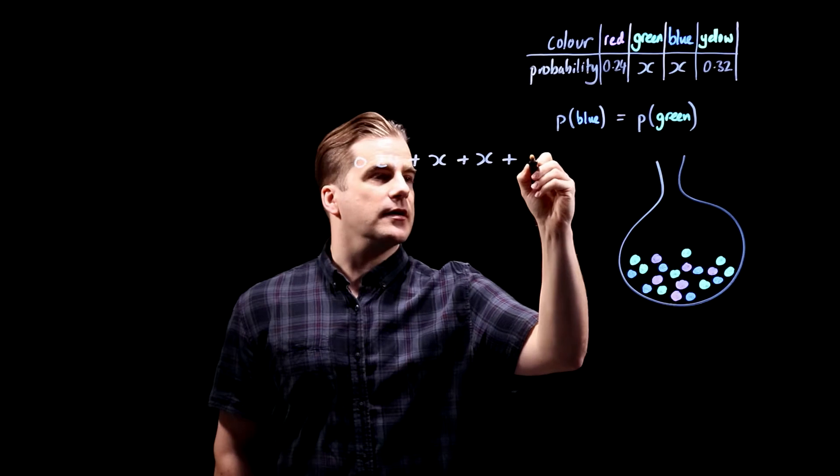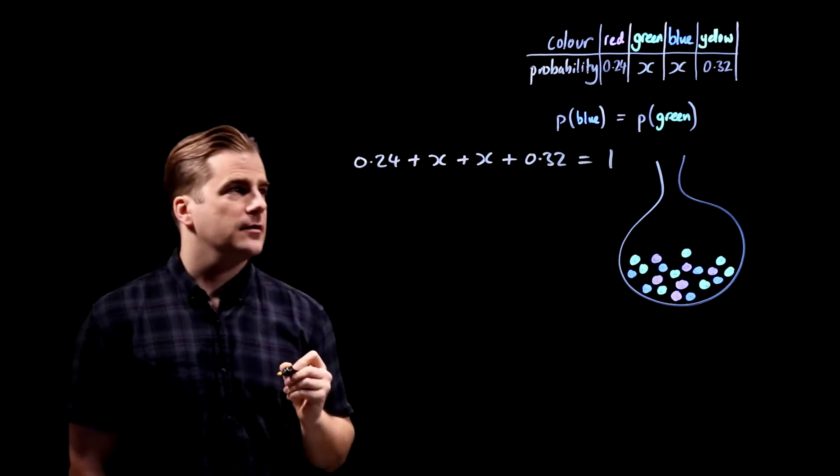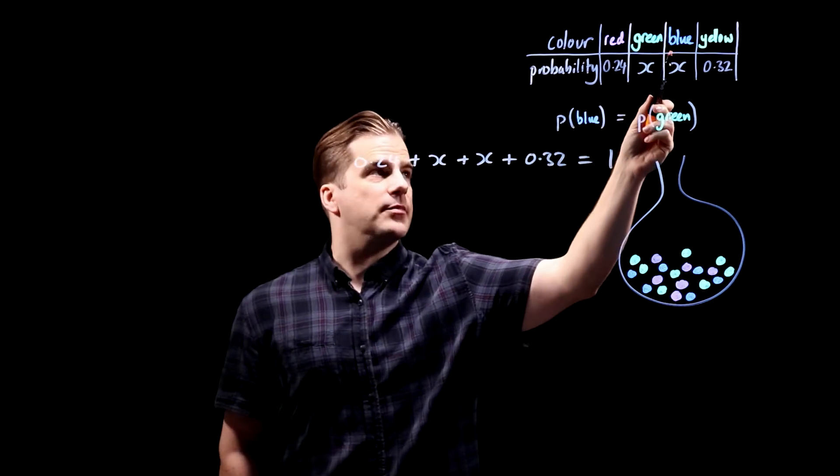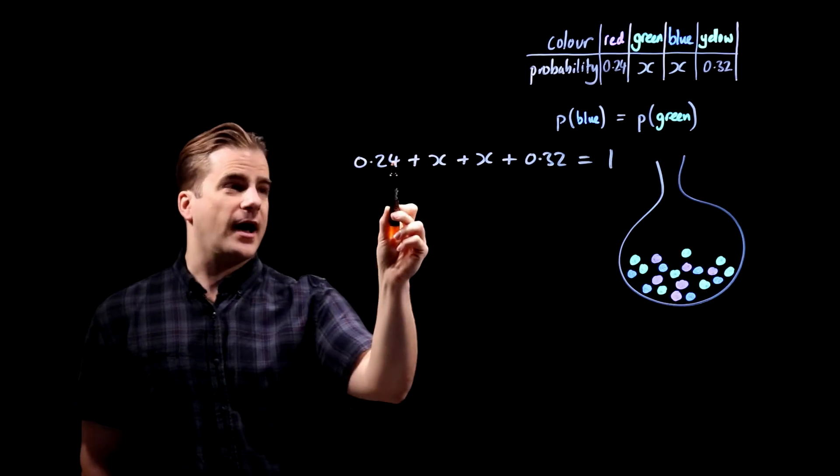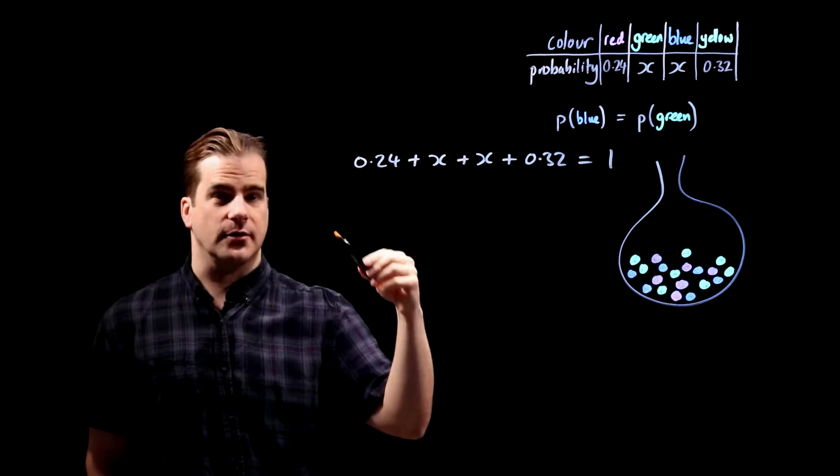because the probability of choosing a red or a green or a blue or a yellow is 1 and you add probabilities when it's probability of choosing that or that you add. So we've got our equation.